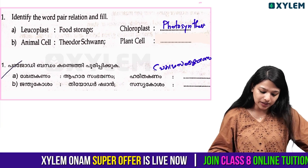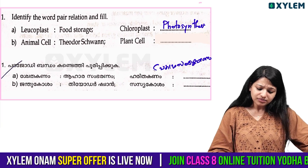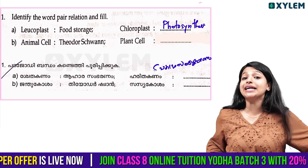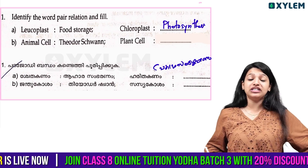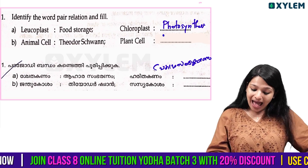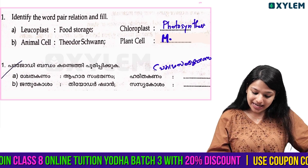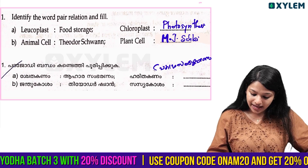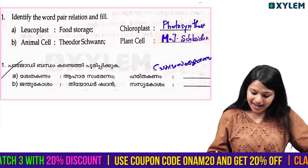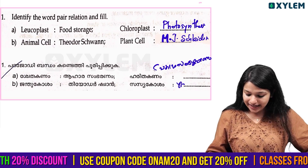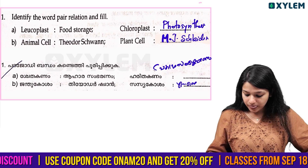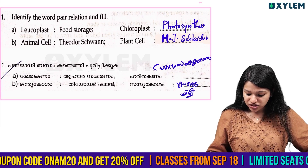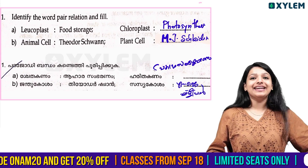Animals. Plants. M.J. Schleiden — yes, M.J. Schleiden is the scientist associated with plants in the cell theory.